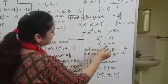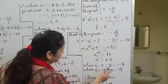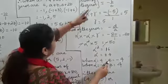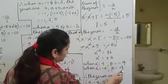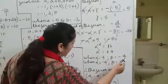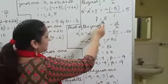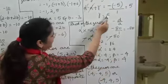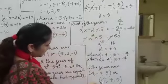Alpha squared is 16, which means alpha is plus or minus 4. Beta is minus alpha, so when alpha is plus 4, beta is minus 4; and when alpha is minus 4, beta is plus 4. We already found gamma is 5. So the zeros are 4, minus 4 and 5 — or equivalently, minus 4, 4 and 5.